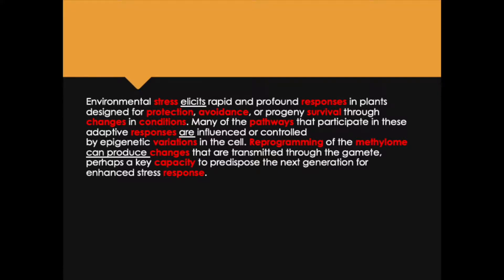Environmental stress elicits rapid and profound responses in plants designed for protection, avoidance, or progeny survival through changes in conditions. Many of the pathways that participate in these adaptive responses are influenced or controlled by epigenetic variations in the cell. Reprogramming of the methylome can produce changes that are transmitted through the gamete, perhaps a key capacity to predispose the next generation for enhanced stress response. That's a pretty abstract passage — it takes a lot of thinking to really understand what's going on.